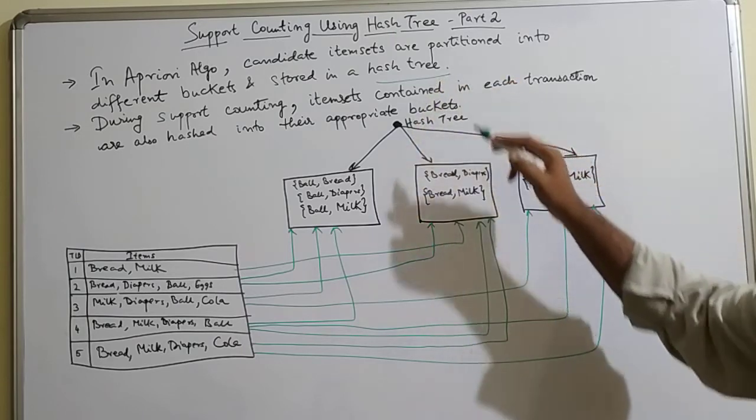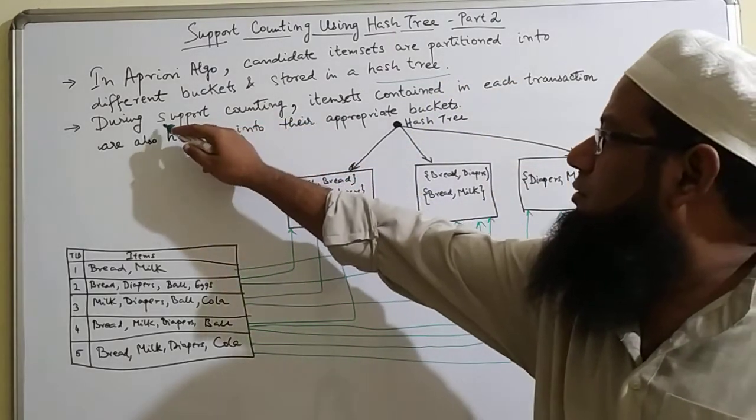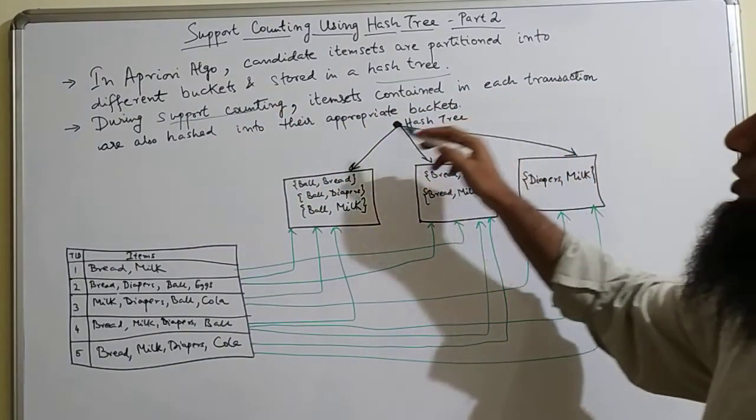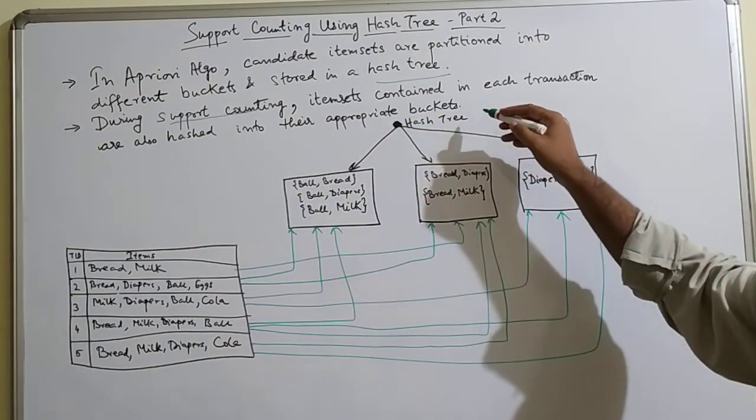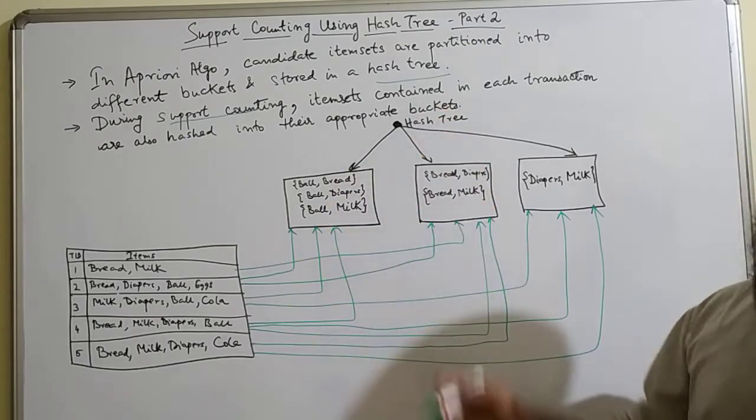During the support counting, item sets contained in each transaction are also hashed into their appropriate buckets. So here I have drawn a diagram to explain these two steps.